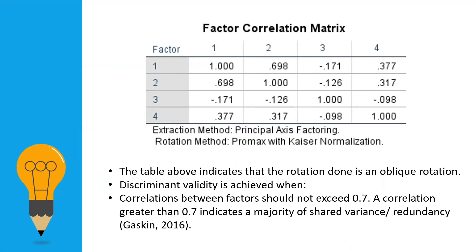How do you obtain the factor correlation matrix? This is one of the outputs when oblique rotation is selected. It is generated automatically when you are using PROMAX or Direct Oblimin rotation.